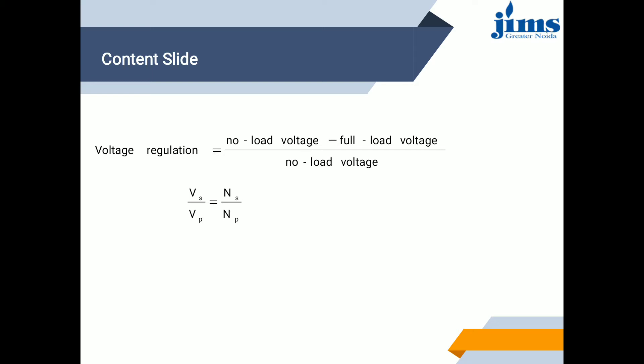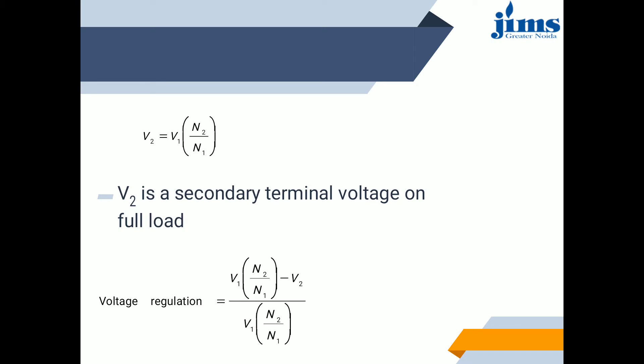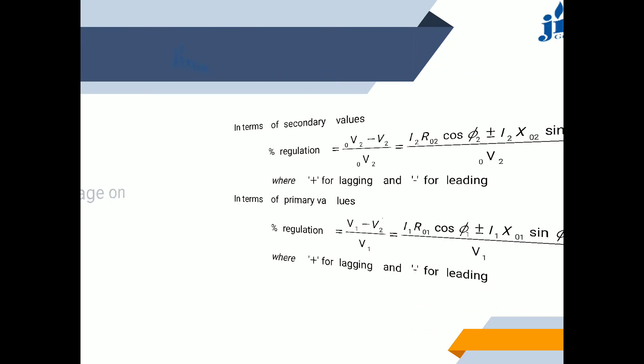Vs upon Vp equals Ns upon Np. The equation can also be written as V2 = V1 × N2 / N1, where V1 is the primary supplied voltage, V2 is the secondary side voltage, N1 is the number of turns in the primary side, and N2 is the number of turns in the secondary side. V2 is the secondary terminal voltage on full load. Voltage regulation can also be written as (V1 × N2/N1 − V2) / (V1 × N2/N1).